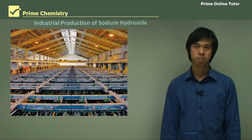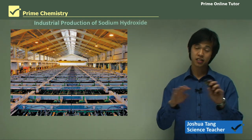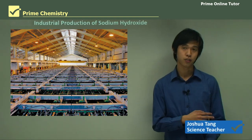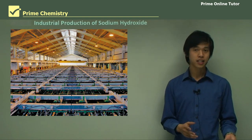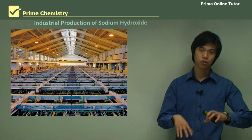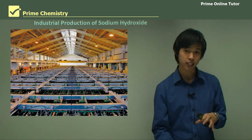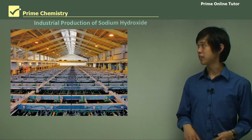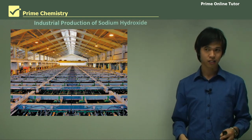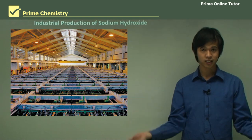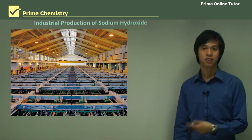Hello everyone, welcome again. Today's lesson will be on industrial chemistry. In this series, we've been looking at the production of sodium hydroxide. In the past two lessons, we've looked at all the fundamental knowledge we need to decipher the sodium hydroxide process. In today's lesson, we're actually going to look at how we produce it industrially — we've done all the necessary groundwork, so now we'll see how we produce sodium hydroxide in the real world.